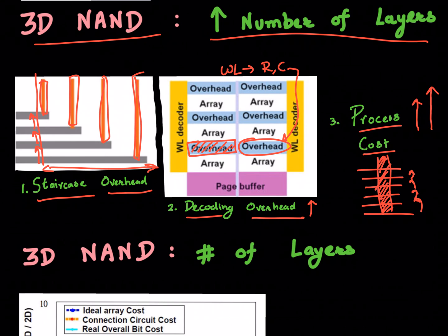So three variables that will increase your complexity and your cost would be the staircase overhead, the decoding overhead, and also increase in the process cost.